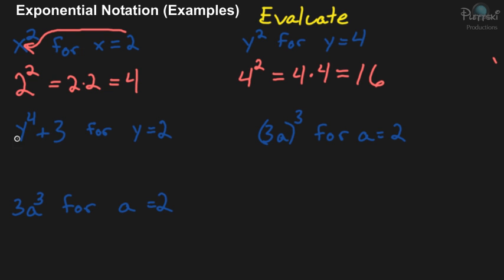Okay, this one's a little bit different. You have y to the fourth power plus 3 for y equals 2. So the first thing you do is substitute in the 2 for the y. And everything else remains the same. And now, the exponent of 4 tells you to multiply 2. And you keep multiplying by 2 until you have 4 of them. So the exponent 4 says 2 times 2 times 2 times 2, and then you still have to add 3 at the end.